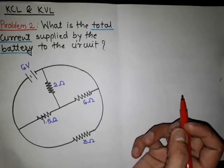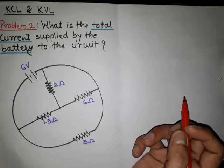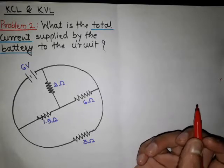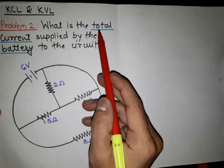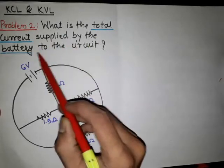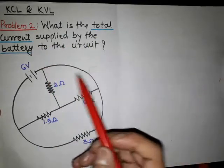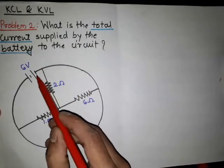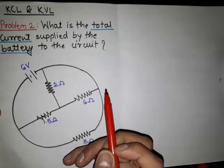Now we are taking the second problem, which is based on KCL and KVL. The question is: what is the total current supplied by the battery to the circuit? That means we have to find the current supplied by the 6V battery.